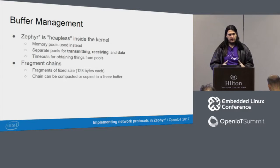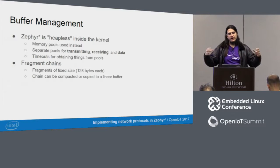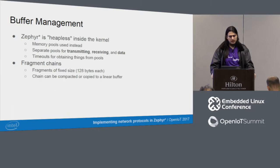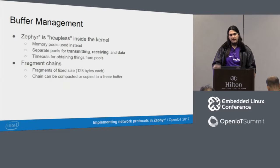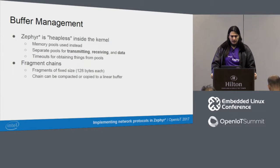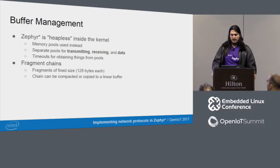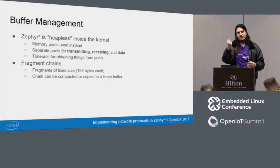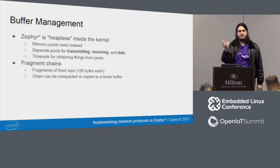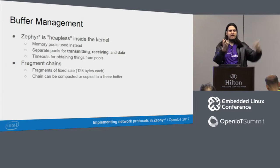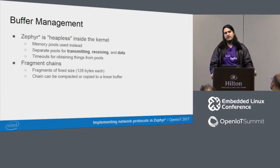To facilitate memory allocation, we have fragment chains. Instead of allocating a single linear buffer in one contiguous space, we allocate fragments of 128 bytes. They form a linked list or tree that can be built however you want — you can add and remove things as needed. This makes it easy to implement protocols where you have data fragments and headers: the user provides the data they want to send, and you just prepend a fragment with the headers. It really makes implementation a lot easier.